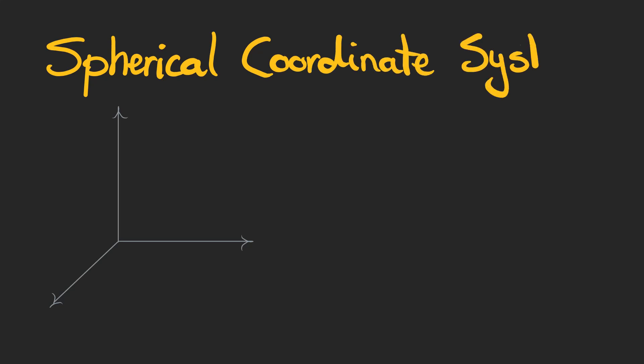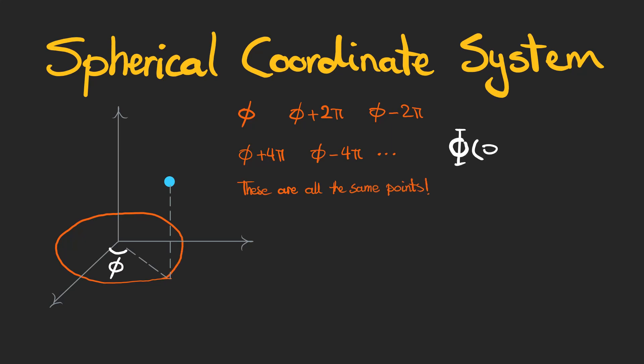Look at the location of this point in the spherical coordinate system. These points all refer to the same point you can see in the picture in our space. And the function has the same value for all of them.